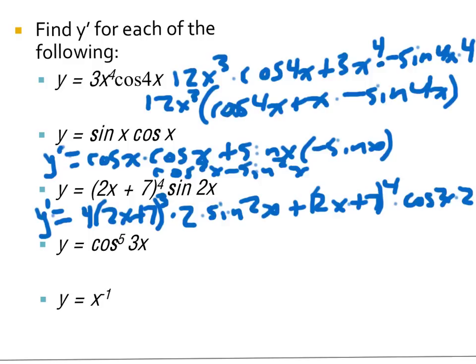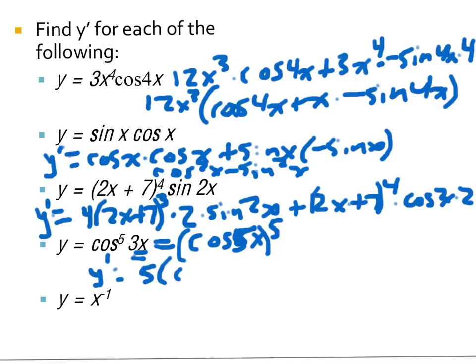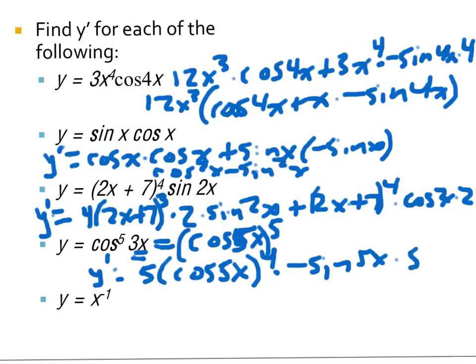The next problem looks like a product rule initially, but there's only one x here, so it's actually a chain rule problem. It's helpful to rewrite this with the fifth power where we normally like to see it — cosine 5x, the whole thing, to the fifth power. Then derive this using the chain rule: 5 times the inside function left alone to the fourth power, times the derivative of the inside — negative sine 5x — times 5.